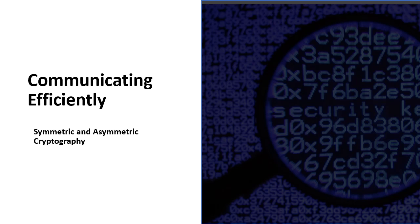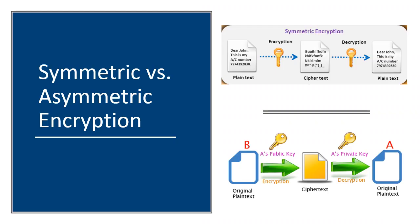Let us now proceed with the second part of our lesson in cryptography. Let us first discuss the difference between symmetric and asymmetric encryption. For symmetric encryption, you have a plain text, you use a key to encrypt it to get a cipher text, and then using the same key you decrypt the message to get the original message. The different ciphers we discussed in the first part are all symmetric encryptions.